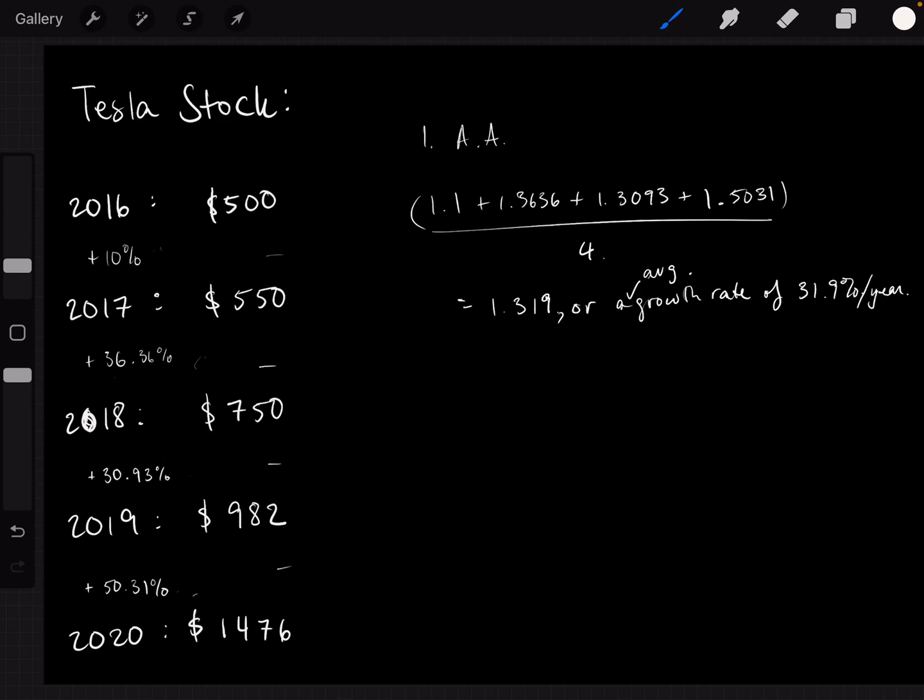So let's see how accurate that is. What this suggests is that if you take 500 and you multiply it by 1.319 four times for 2017, 2018, 2019, and 2020, you should end up with 1476. So let's see that 1.319 times 500 times 1.319, times 1.319, times 1.319.